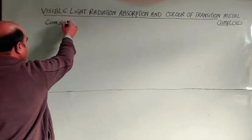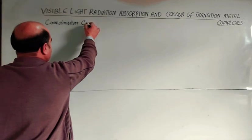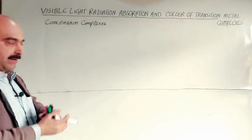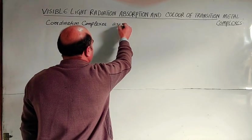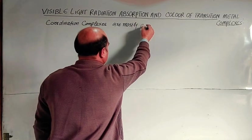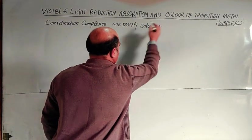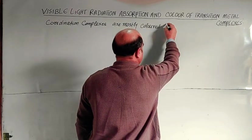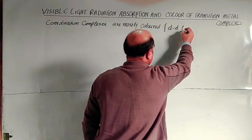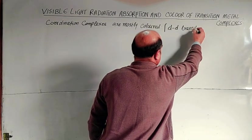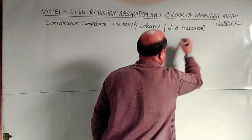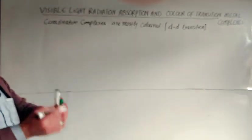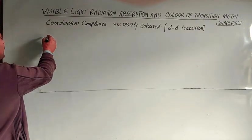The topic is that coordination complexes, these transition metal complexes, are mostly colored due to the transition of electrons from one d-orbital to another d-orbital by the absorption of visible radiations.